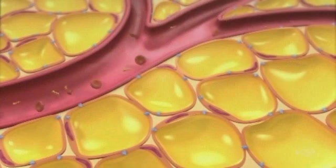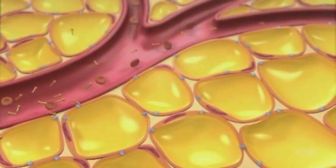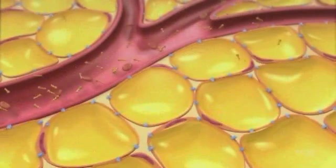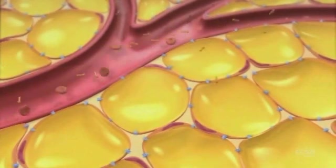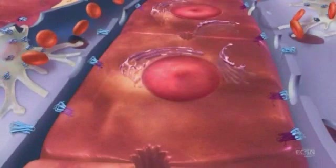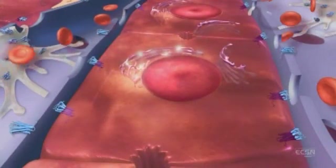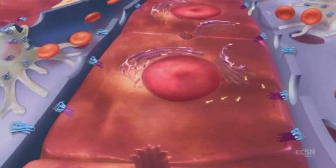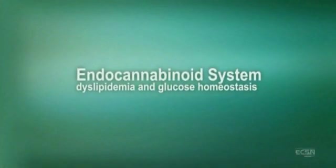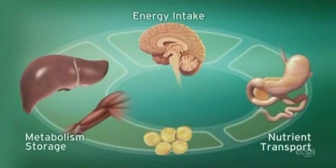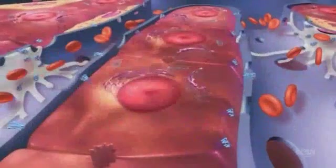ECS regulation of peripheral metabolism influences energy balance. Stimulation of the ECS increases food intake and adiposity; conversely, blocking CB1 receptors reduces food intake and adiposity. In the liver, ECS stimulation can lead to lipogenesis through the activation of hepatic lipogenic enzymes and increased fatty acid synthesis. Chronic stimulation of the ECS is associated with dyslipidemia.